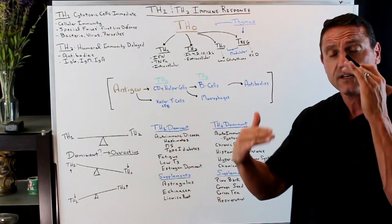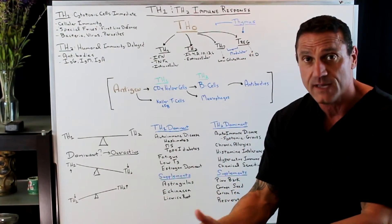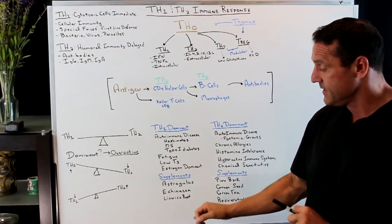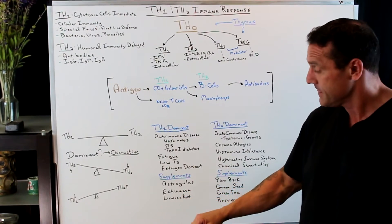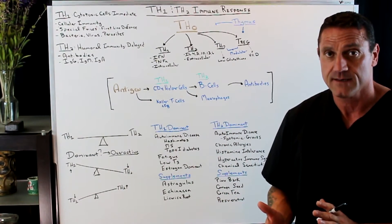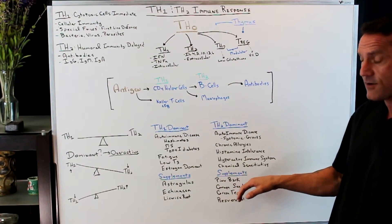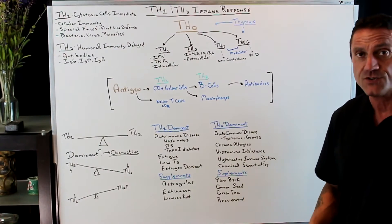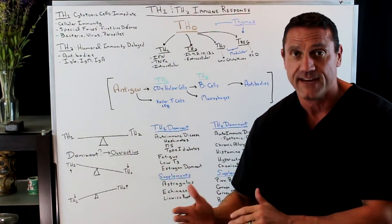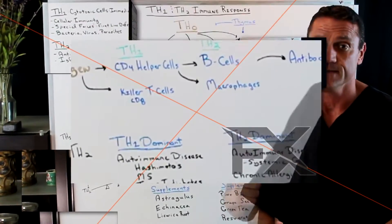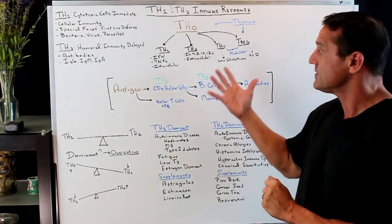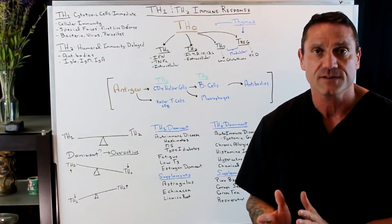If you can determine which side is dominant, you'll understand why certain supplements don't work. If you're Th1 dominant, supplements like astragalus, echinacea, and licorice root will help calm down the Th1 dominance. If you're Th2 dominant, pine bark, grapeseed extract, green tea, resveratrol, and caffeine can help. People who are Th2 dominant may find caffeine doesn't work for them. Overall, glutathione always helps balance out the regulatory system. Diet and exercise are also a big part.